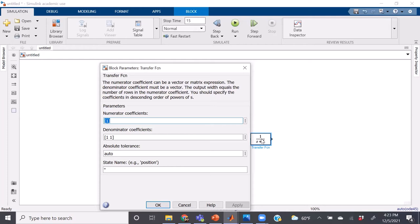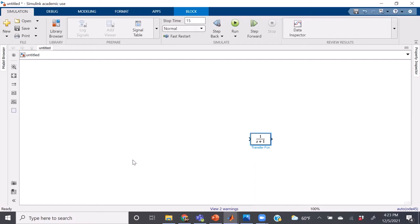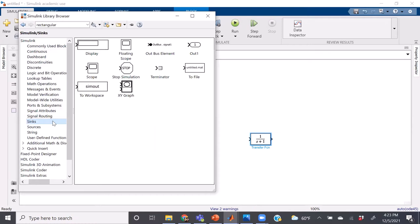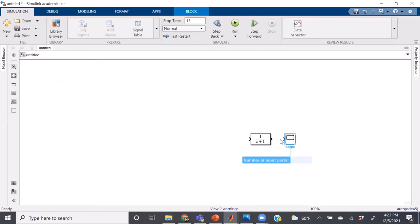Then we'll also need some way to see what our output is. So go back to library browser and go to sinks. I always use the scope because the scope will just produce a graph of your output as a function of time.